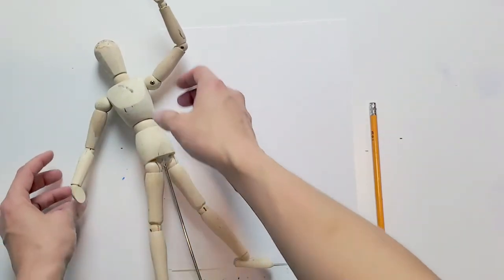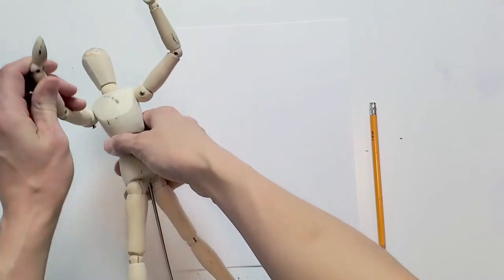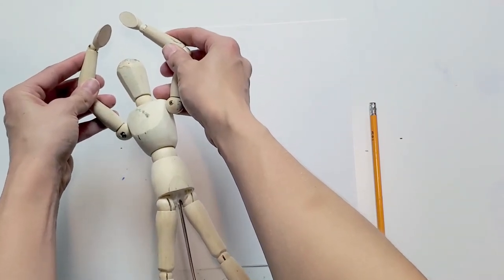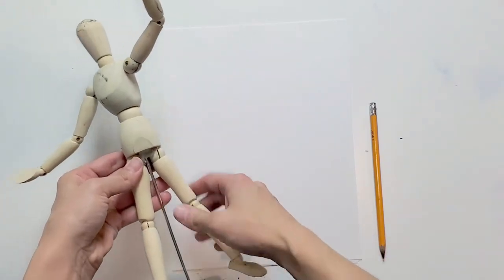So for example, if you're drawing a ballerina, you might position this mannequin in a way that suggests that it is moving like a ballerina would move.